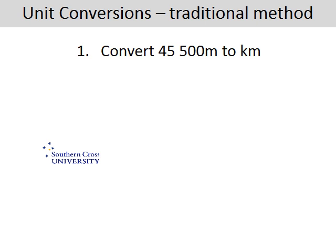In this video we're looking at unit conversions using the traditional method. If you've got a book of conversions in front of you, you'll find that the conversion from metres to kilometres could be written one of two ways: 1,000 metres is equal to 1 kilometre, or 1 kilometre is equal to 1,000 metres.